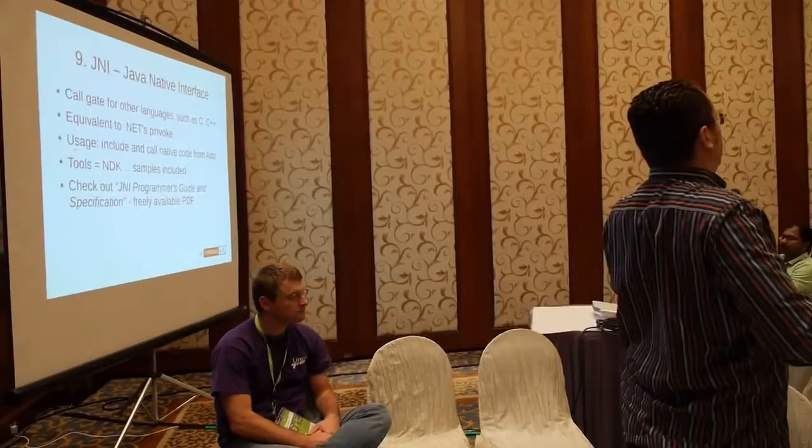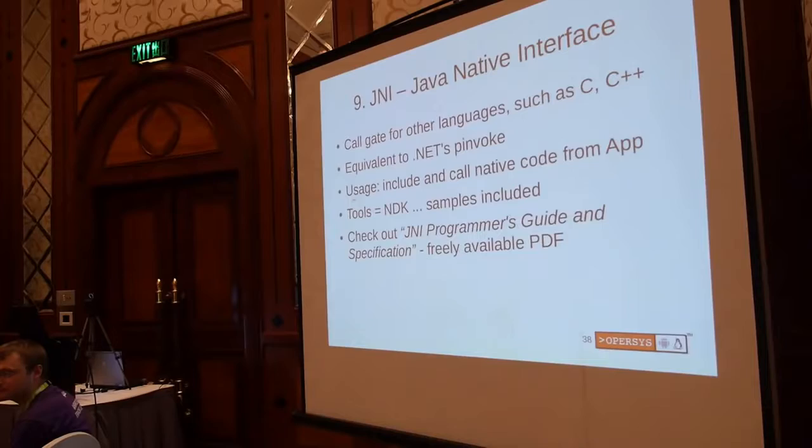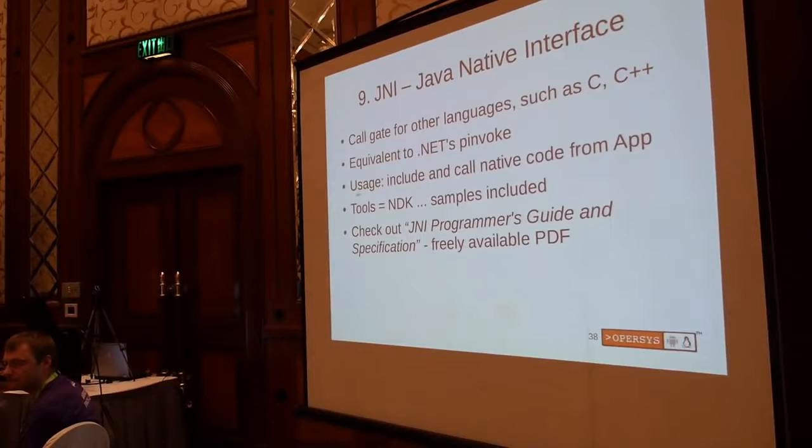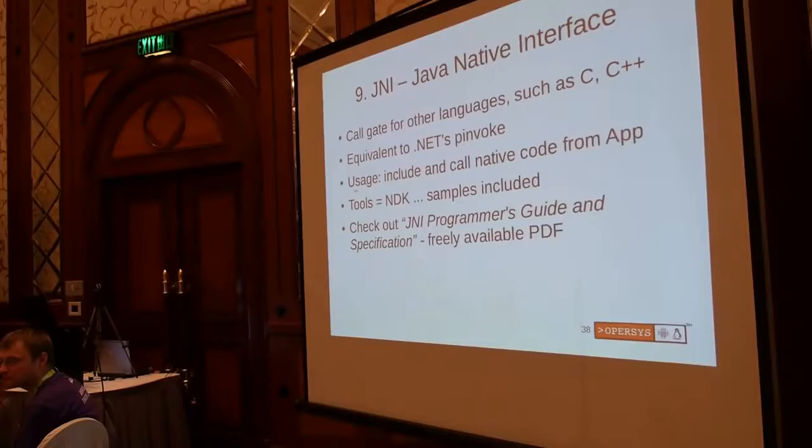At some point you actually have to do something useful, so you have to go into C. The way you do that is through the Java Native Interface, or JNI. JNI is not well documented — it's commonly known as ancient Greek. There is one document that used to be available from Oracle's site, a book from Addison Wesley. JNI is the glue layer that allows you to go from Java to C and vice versa. Hopefully on Friday I'll get the chance to show you what that means in terms of code.